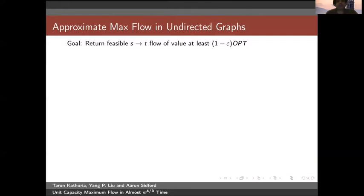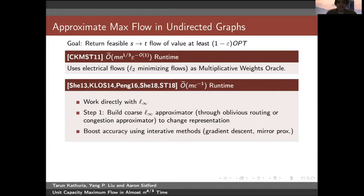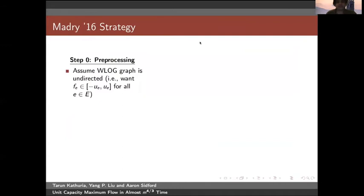For approximate max flow in undirected graphs, the goal is to return a feasible s-t flow whose value is at least (1 - epsilon) times the max flow. For this, CKMST get an m^(1/3) poly(1/epsilon) algorithm using electrical flow and multiplicative weight updates. Then a long line of work culminated in a near-linear time algorithm working directly with L-infinity by building a coarse L-infinity approximator. After this work, one can ask if these primitives can be combined with IPMs, but that seems problematic because IPMs seemingly need L2-style primitives.